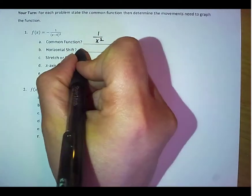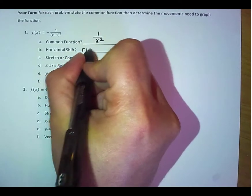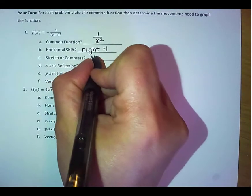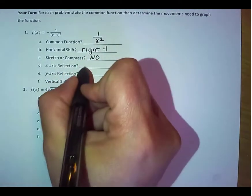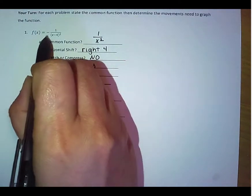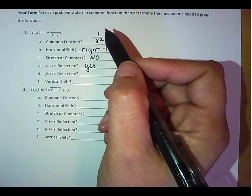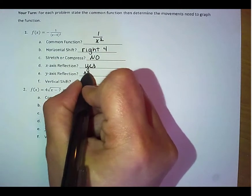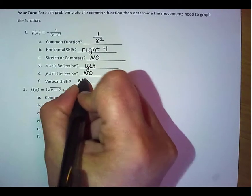The horizontal shift would be to go to the right 4. There is no stretch or compress. There is an x-axis reflection, since it's negative here in front. There is no y-axis reflection, and there is no vertical shift.